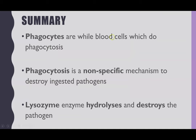So in summary: phagocytes are white blood cells which carry out phagocytosis, and the key example is a macrophage. Phagocytosis is a non-specific mechanism, meaning it doesn't matter what the foreign particle is — whether it is an abnormal cell, a cell from another organism of the same species such as in transplants, or a pathogen — it will still respond the same way by engulfing and destroying. The way pathogens are actually destroyed is by lysosomes fusing with the phagosome, releasing lysozyme enzyme, which will hydrolyze and destroy the pathogen.